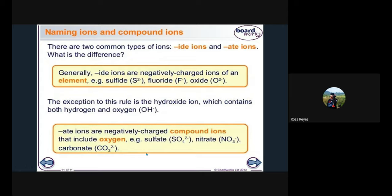For naming ions and compounds, there are two common endings: '-ide' and '-ate.' Compounds ending with '-ide' are negatively charged ions of a single element — such as sulfide, fluoride, and oxide. The exception to this rule is hydroxide, which contains hydrogen and oxygen. Compounds ending with '-ate' are negatively charged compound ions that include oxygen — such as sulfate, nitrate, and carbonate.